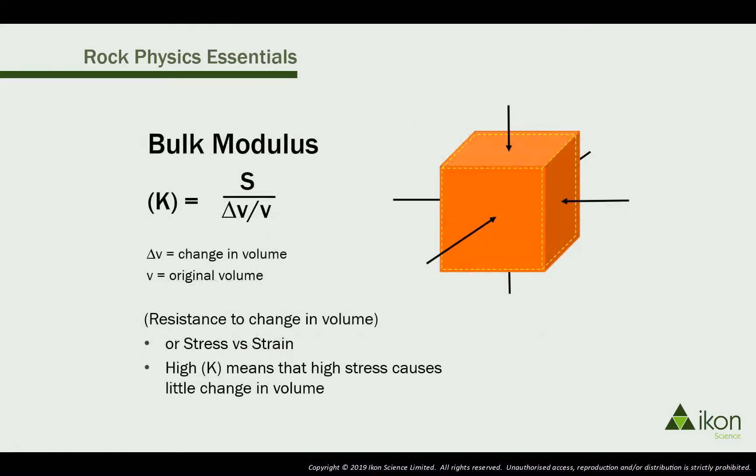The bulk modulus, known as K, is a measure of the rock's resistance to a compressional force. A high value means the rock is very incompressible.